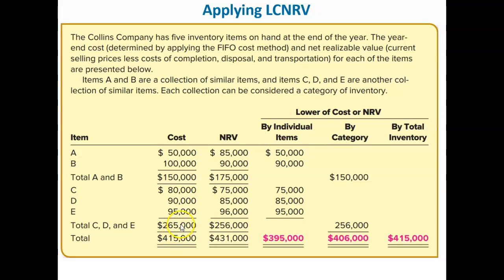Items A and B are a collection of similar items. Items C, D, and E are another collection of similar items. Each collection can be considered a category of inventory.